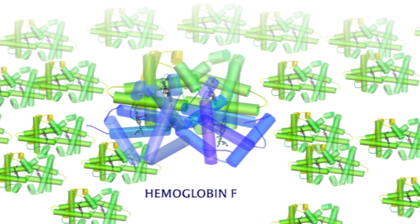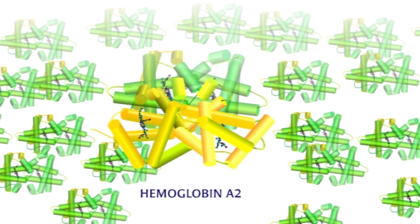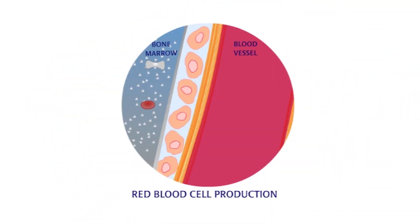Delta chains combine with alpha to make hemoglobin A2, the secondary adult hemoglobin. Oxygen delivery rests solely on these alternate hemoglobins, but not enough can be made. Excess alpha globins are left unbound in the cell and they clump together on the inside of the cell's membrane.